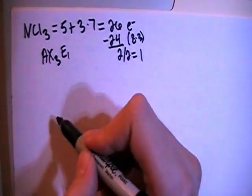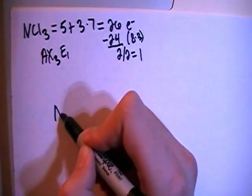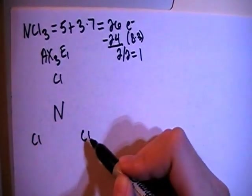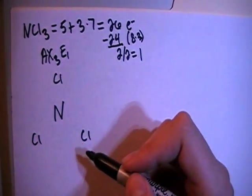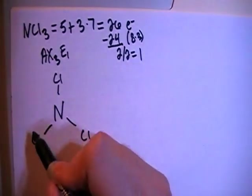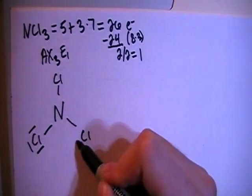So let's go ahead and draw this structure. We have the nitrogen in the center surrounded by the three chlorines, and then we can go ahead and single bond each of the chlorines to the central nitrogen, and then fill in the octets of each of the surrounding chlorines.